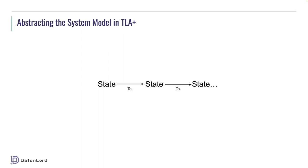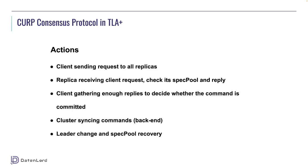A state in TLA+ is a snapshot of all the variables in the system at a given point in time, and each state is atomic. The key idea of abstracting a model in TLA+ is to simplify by hiding or ignoring details that are not relevant for the properties we want to verify. For example, in a traffic light system with three states — red, yellow, and green — we define how the light changes: red to green, green to yellow, yellow to red. We don't allow changing from red to yellow. We focus only on the core idea of abstracting a system in TLA+ mathematically.